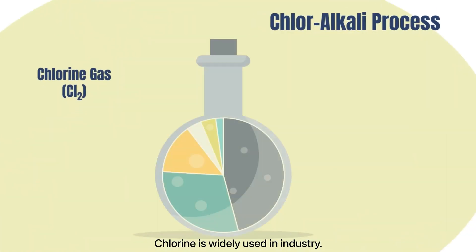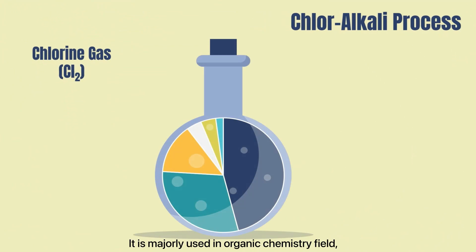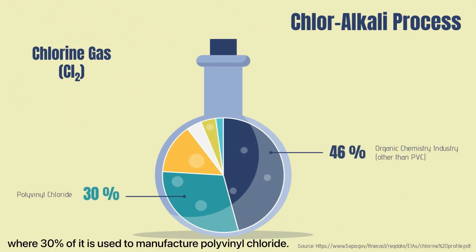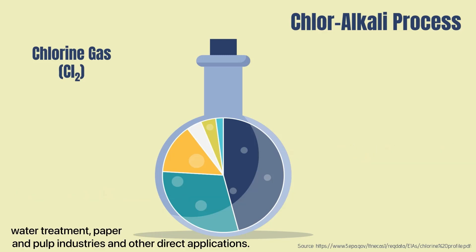Chlorine is widely used in industry. It is majorly used in organic chemistry fields, where 30% of it is used to manufacture polyvinyl chloride. Other uses of chlorine include inorganic chemistry, water treatment, paper and pulp industries, and other direct applications.